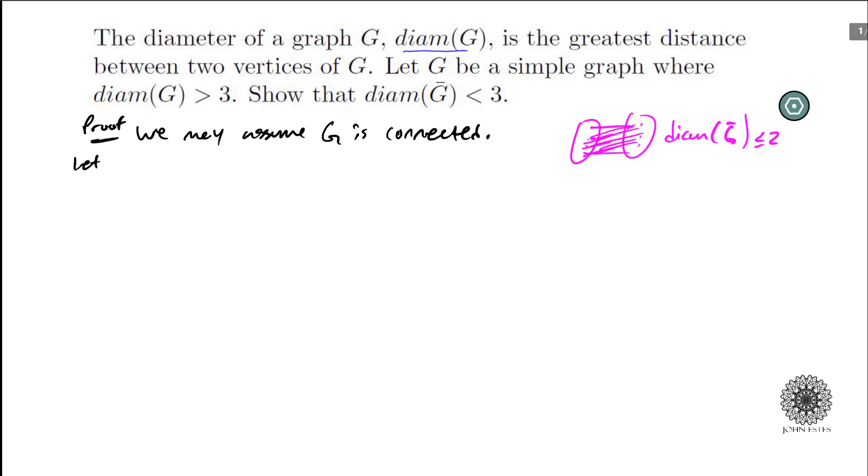Alright so now let's let X and Y be vertices such that the distance in G of X and Y is actually your diameter. So remember that's going to be greater than 4. So as the diameter of G is greater than 4, we know that there are some other vertices as well. There exists a U and V in the vertex set throughout X and Y.